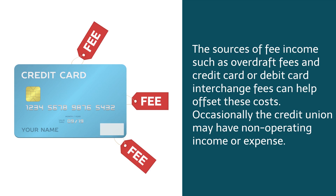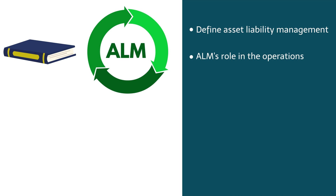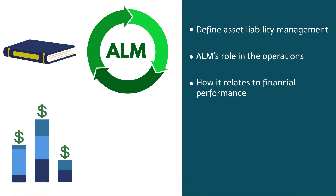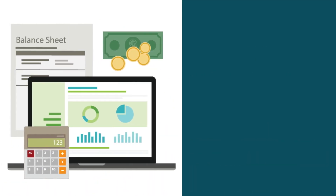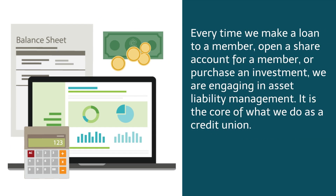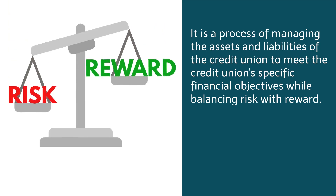How efficient the credit union is at managing overhead costs or operating expenses is also a factor in how well the credit union performs. The sources of fee income such as overdraft fees and credit card or debit card interchange fees can help offset these costs. Occasionally, the credit union may have non-operating income or expense — these are usually one-time events such as the sale of an investment or fixed assets. In this section, we'll define asset liability management, determine its role in the operations of your credit union, see how it relates to financial performance, and define your role as a board member. While we often think of asset liability management as a regulatory or compliance exercise, every time we make a loan to a member, open a share account for a member, or purchase an investment, we are engaging in asset liability management. It is the core of what we do as a credit union. It is a process of managing the assets and liabilities of the credit union to meet the credit union's specific financial objectives while balancing risk with reward.